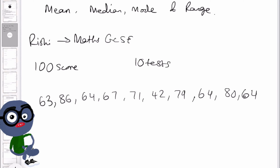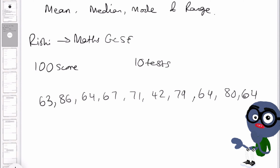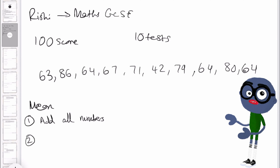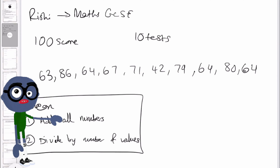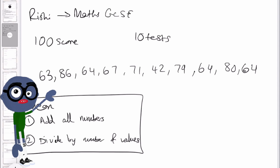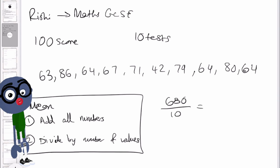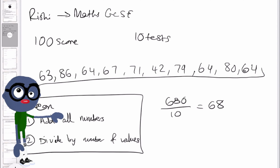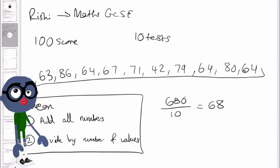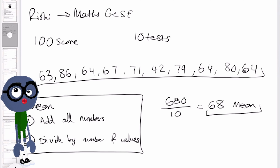Let's take a look at the mean first. The mean uses all of the values in the data. To calculate it, step one: add up all of the numbers, and step two: divide by how many values there are. Adding all the numbers gives us 680, and then dividing by 10 gives us a mean of 68.